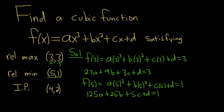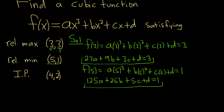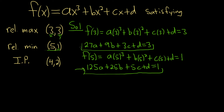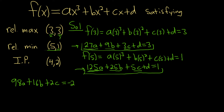Now the inflection point is a point on the graph, so we could plug in 4 and set it equal to 2. However, at this point we have something pretty nice — we have these two equations and we can subtract them to get rid of d. So subtracting: 125a − 27a = 98a, 25b − 9b = 16b, 5c − 3c = 2c, d − d = 0, and 1 − 3 = −2. So 98a + 16b + 2c = −2.